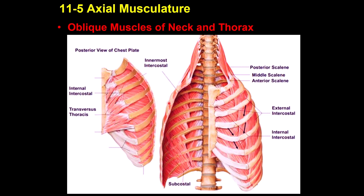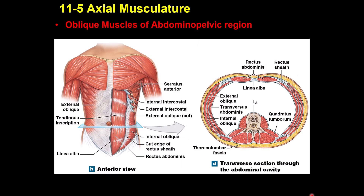The deepest layer of the chest is called the innermost intercostal. In the lower part, these muscles are called subcostal. These are all muscles of expiration — muscles of breathing out. Now looking at the muscles of the abdomen.